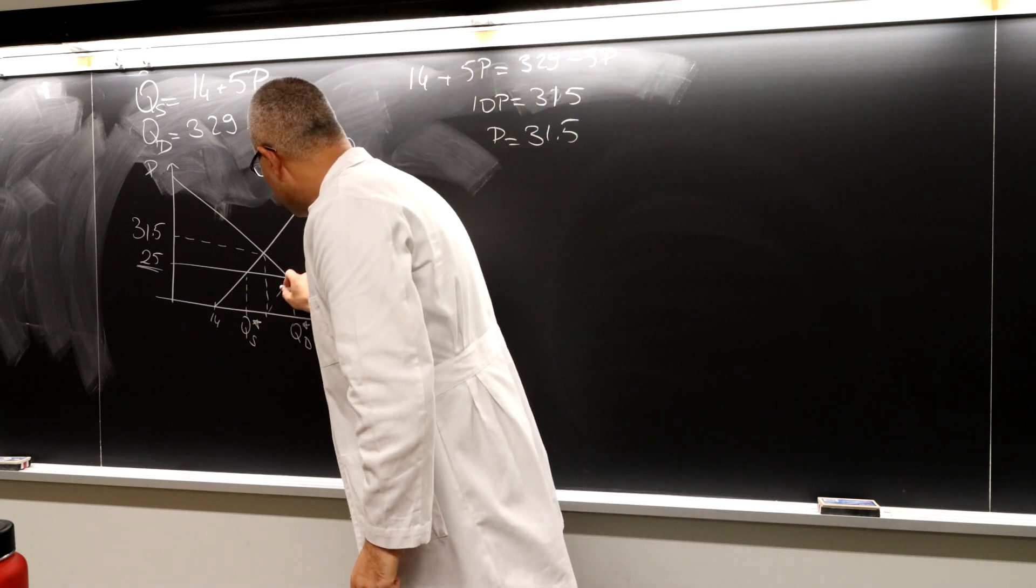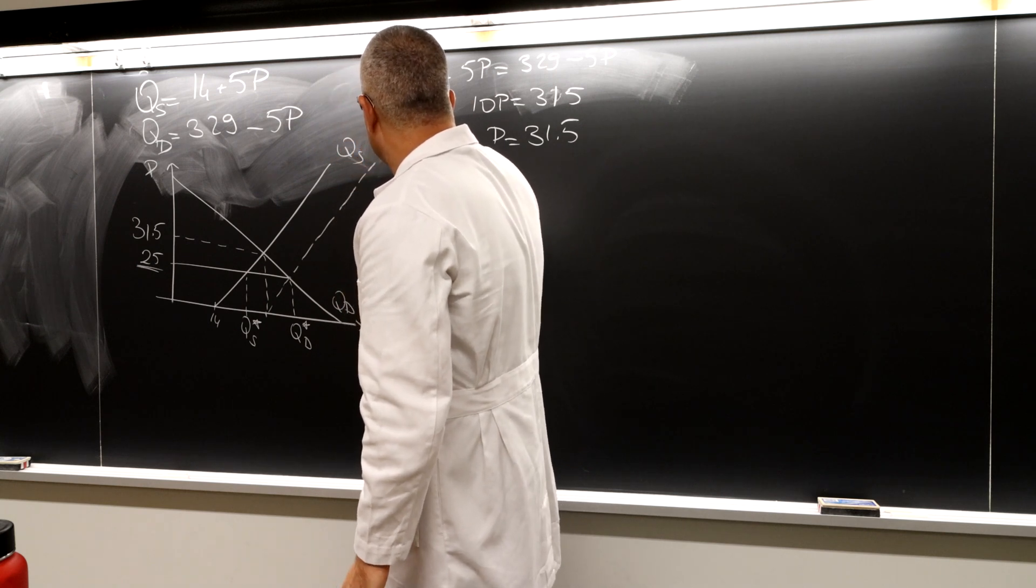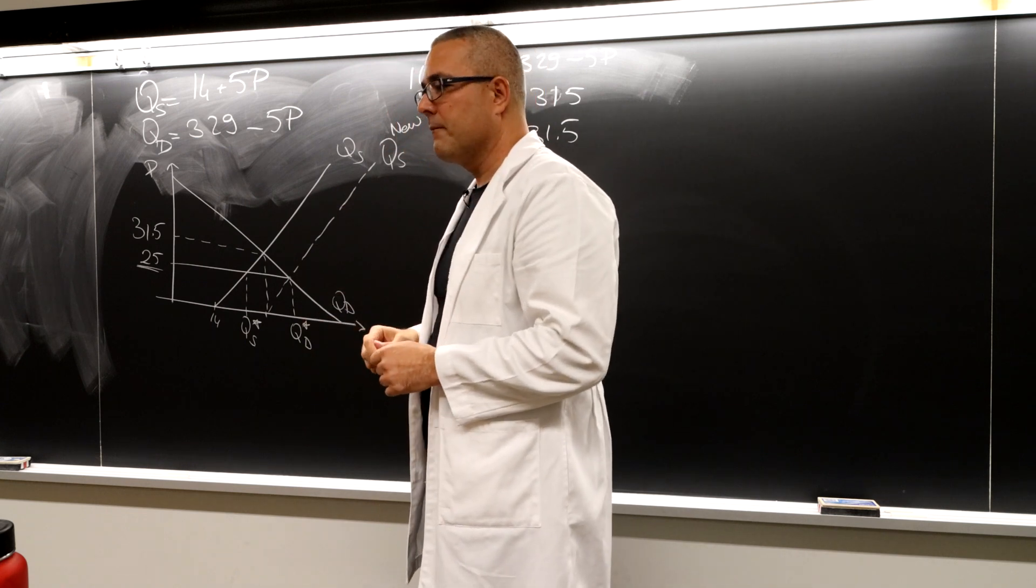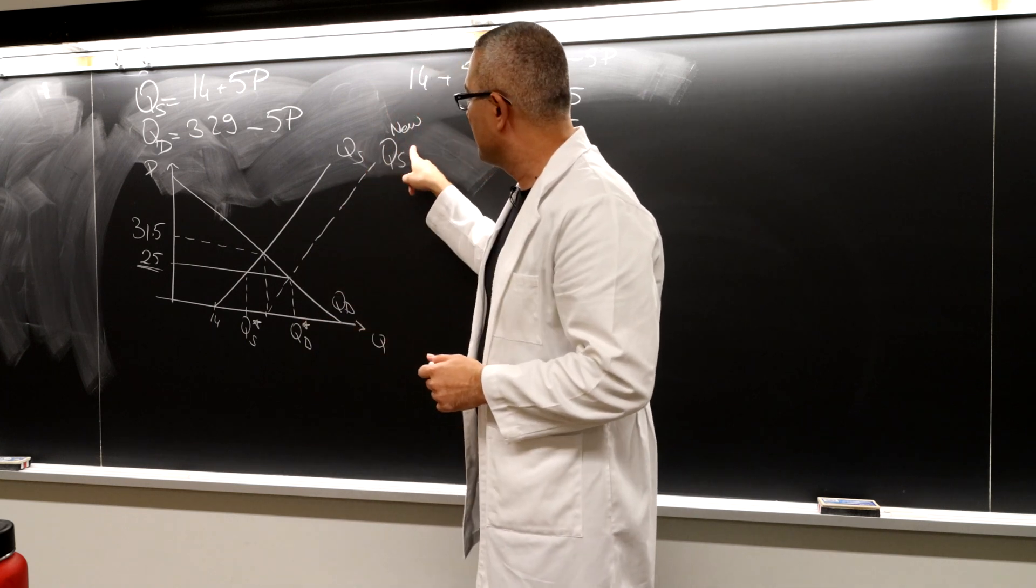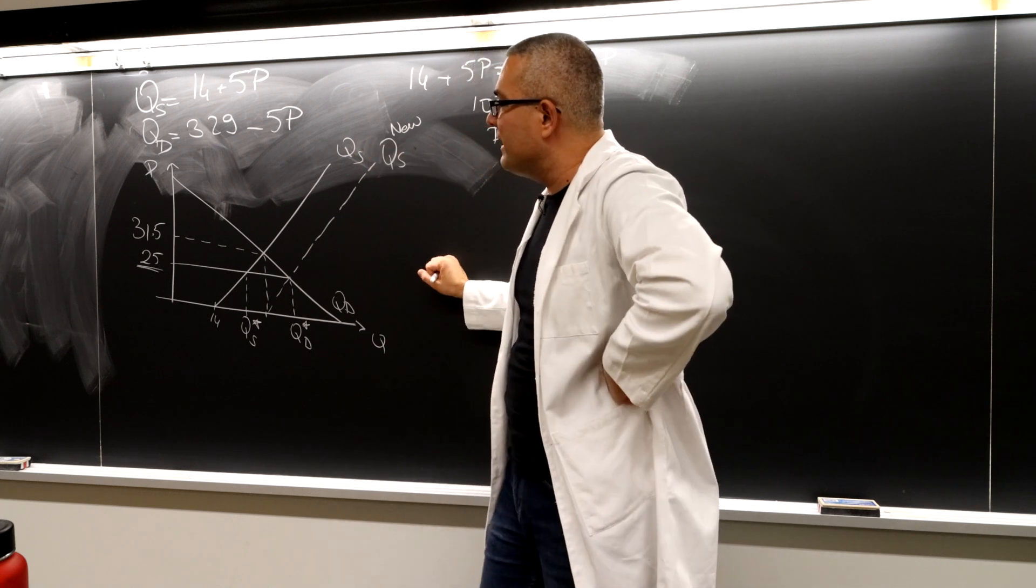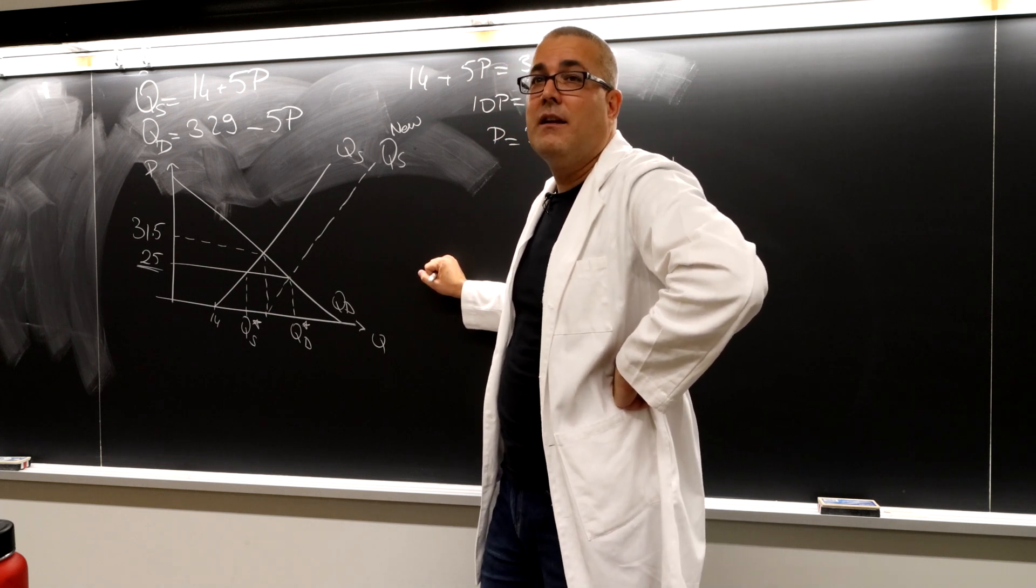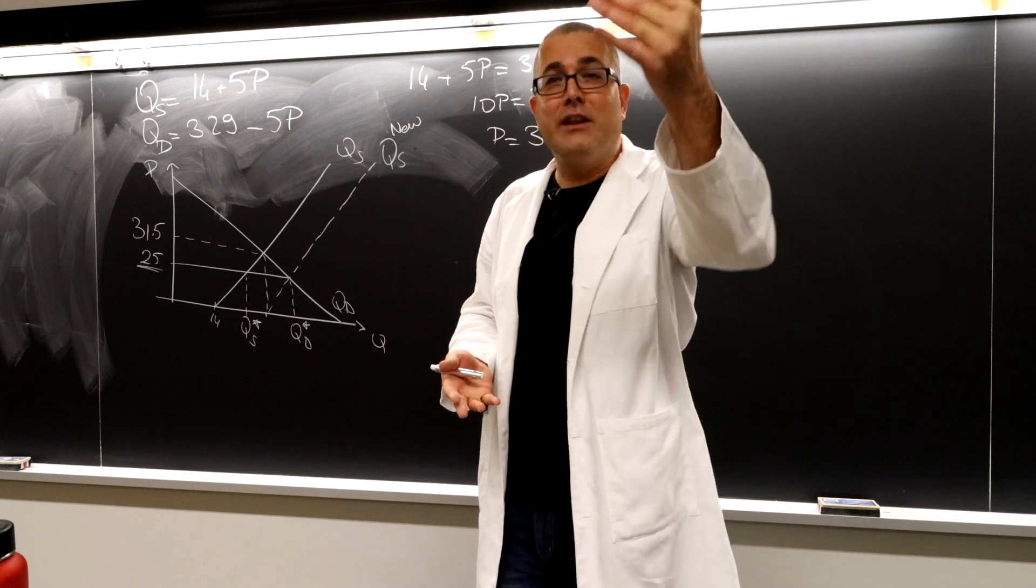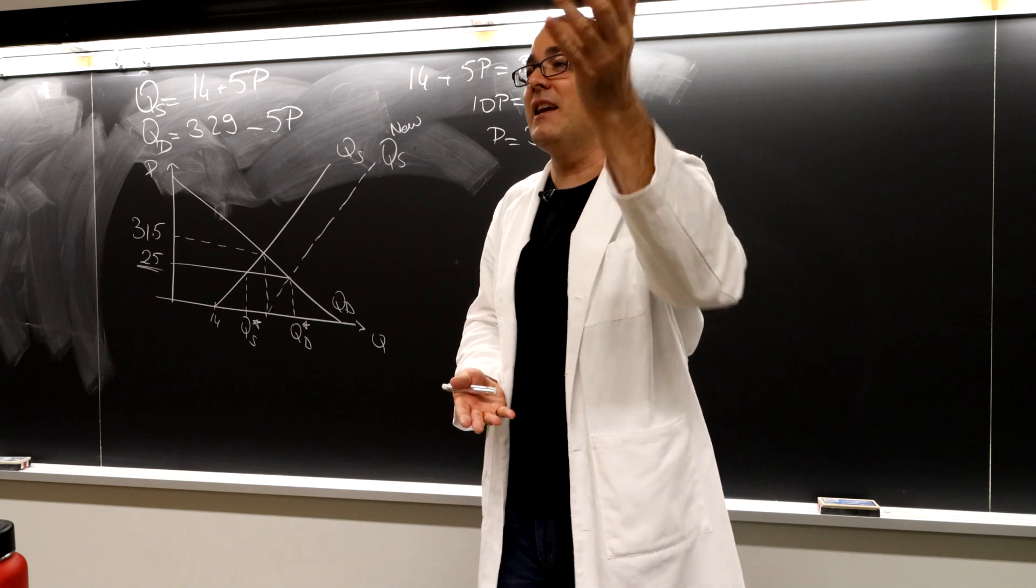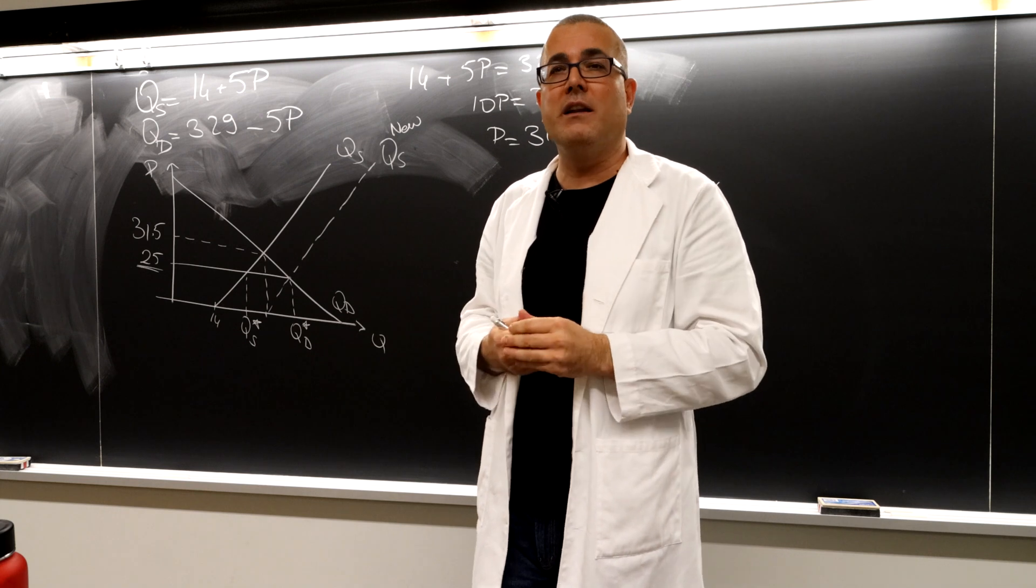Here, Q s under subsidy, let's call it Q s new. The difference between Q s new and Q s? When you say the difference, what is that? How do I calculate it? The difference between these two supply curves must be the subsidy level. Exactly. Good intuition. But what is it? $5, $10, how do I find it?